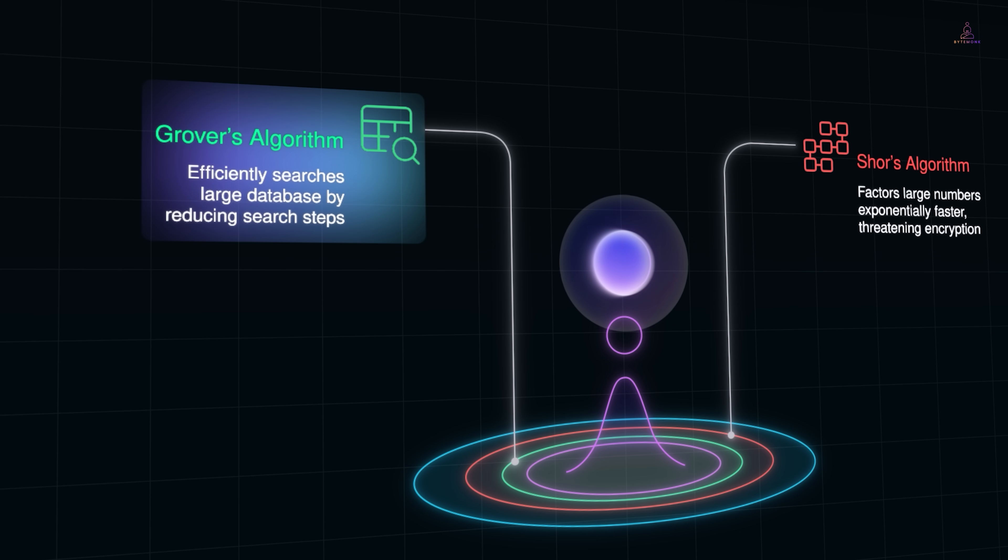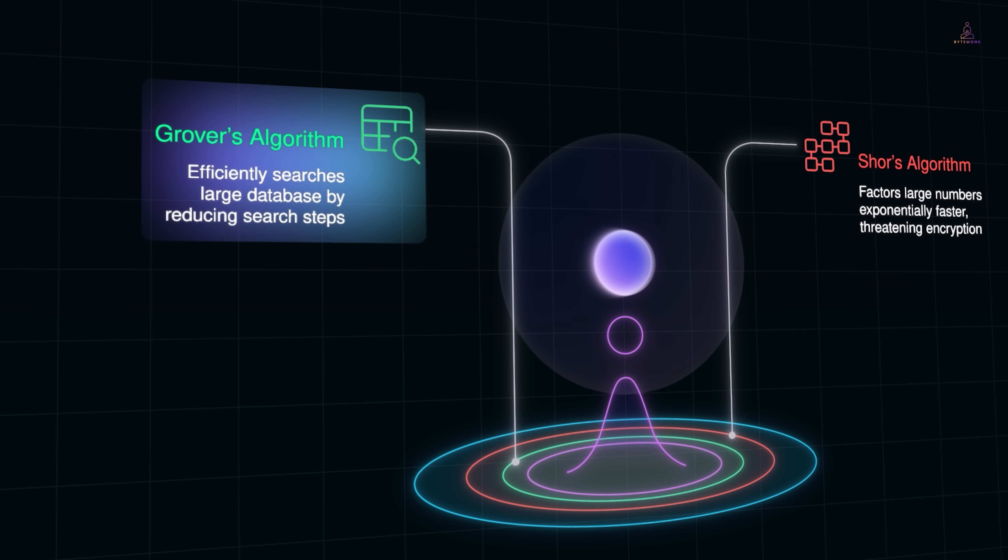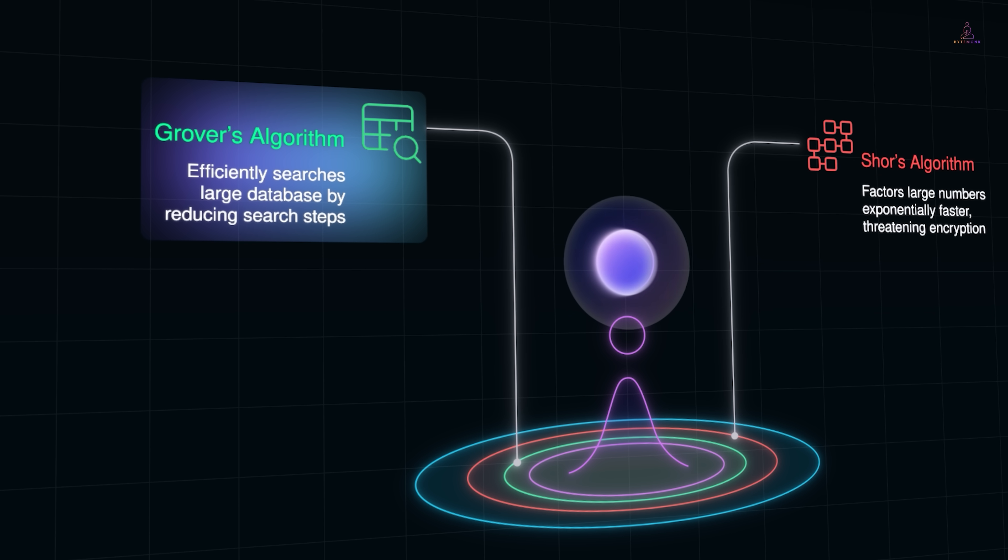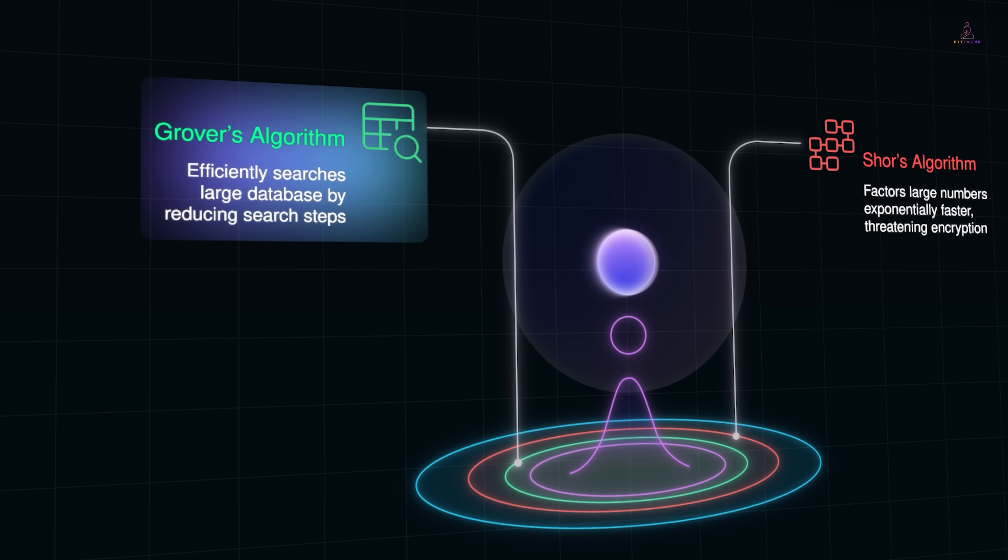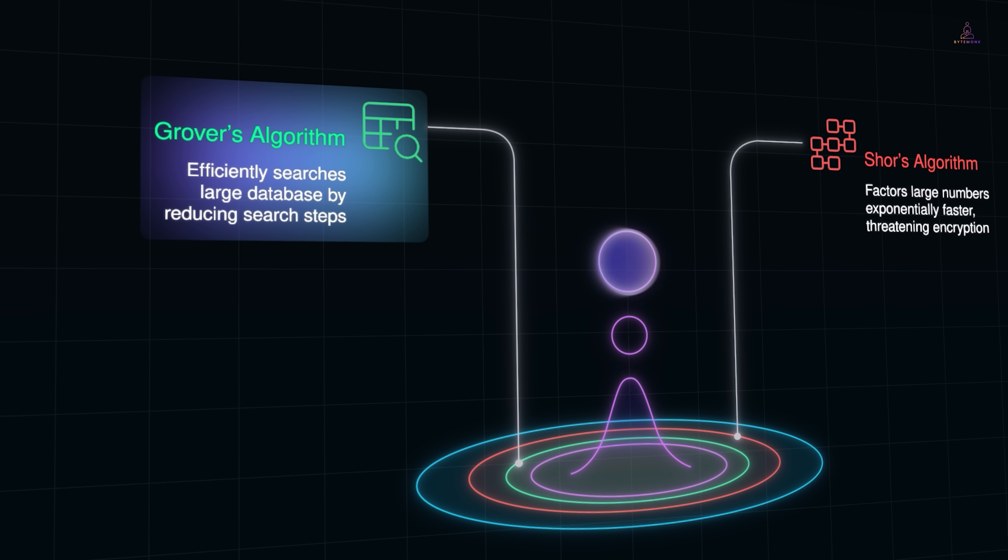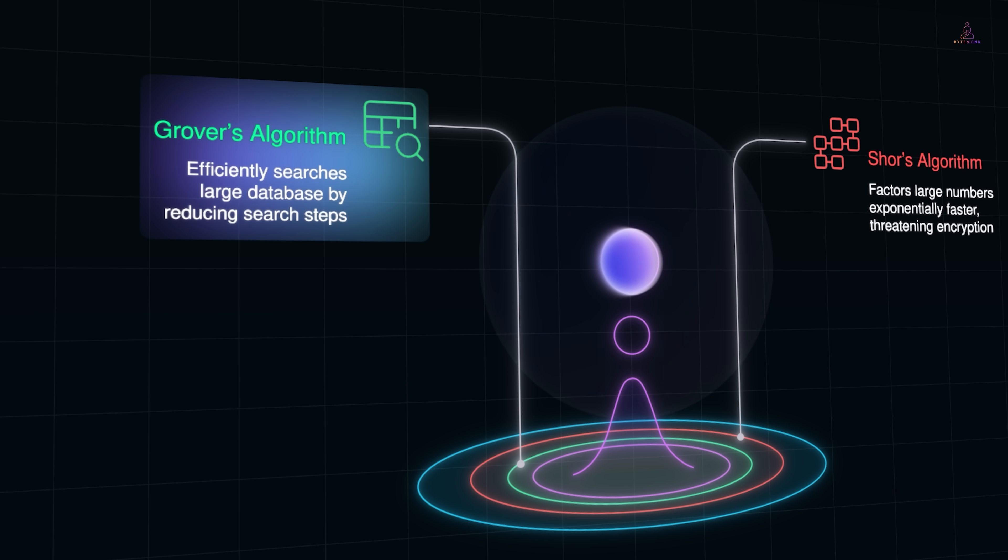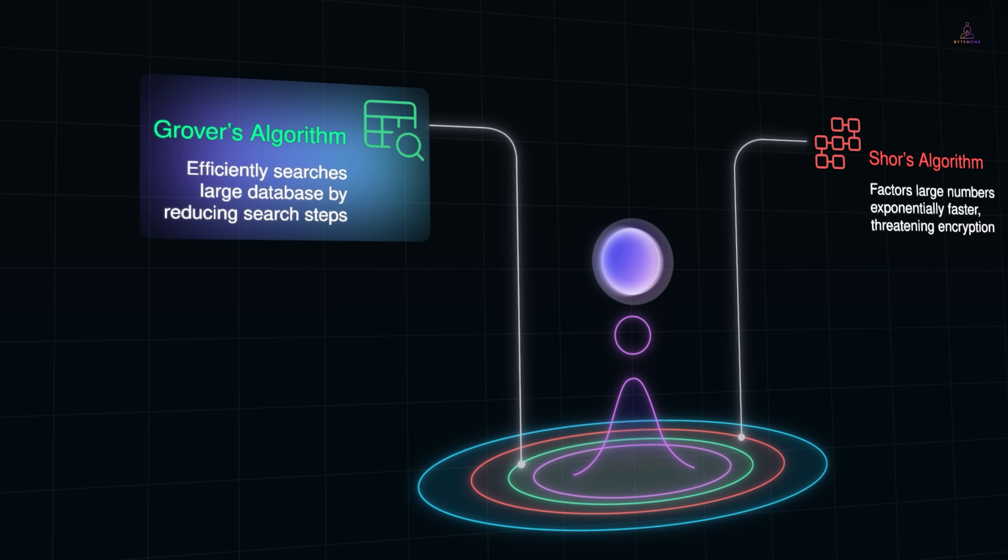Take Grover's algorithm, for example. Imagine searching a giant phone book with millions of names. A classical computer might need to flip through, on average, half the entries before finding the right one. Grover's algorithm can find the name in only about the square root of that number of steps, which is a massive speedup for huge datasets.